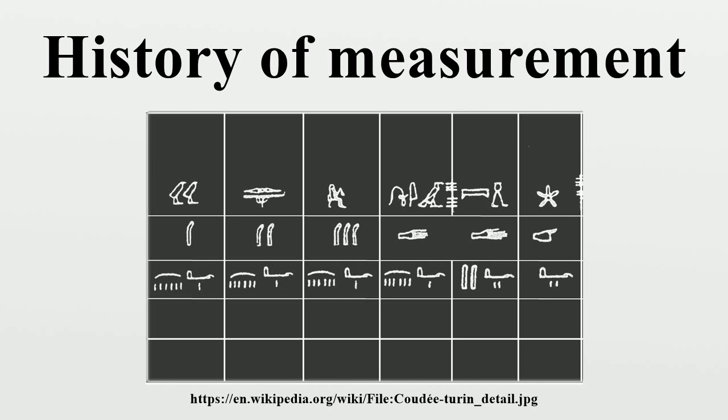The system attributed to the Indus Valley civilization is sometimes cited as particularly accurate. Based on an ivory scale found in Lothal, their smallest unit corresponded to approximately 1.704 millimeters, the smallest division ever recorded on a scale of the Bronze Age.